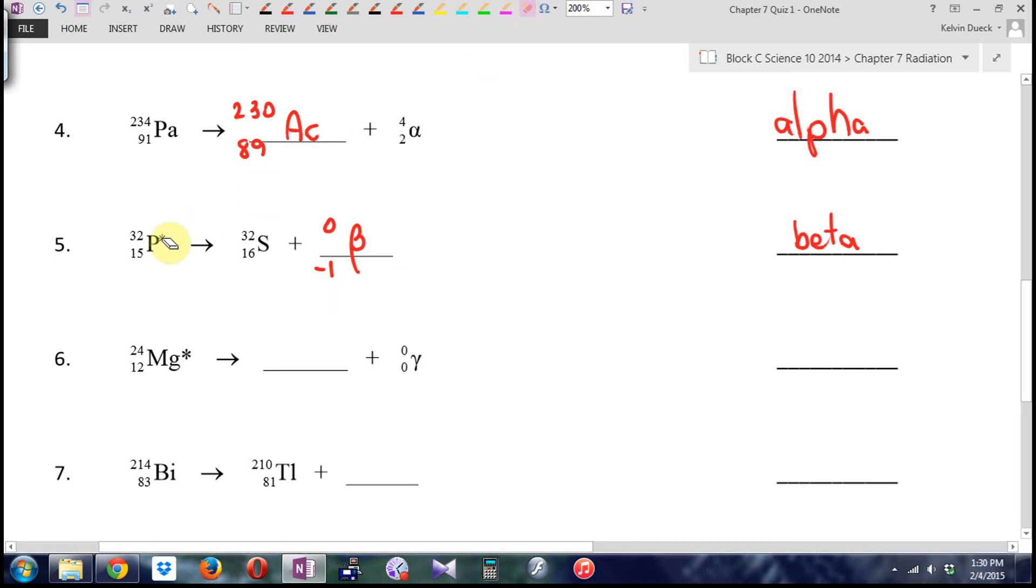This is beta decay, and it's going to be a mass of zero and a charge of negative one. Apparently, a phosphorus atom, one of the neutrons split, gave off a beta particle, and also we were left with an extra proton. So now instead of phosphorus element 15, we're sulfur element 16.